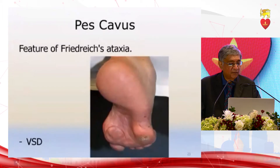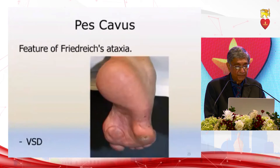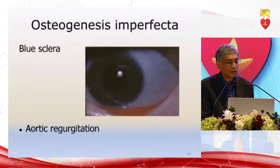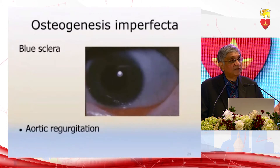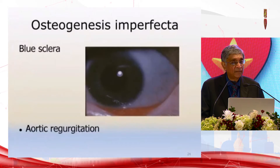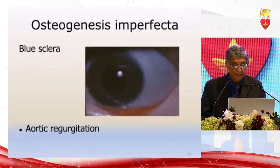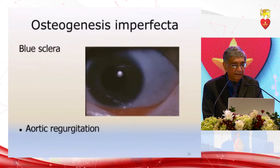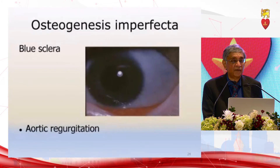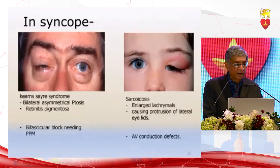Pes cavus features of Friedreich's ataxia — these are all myopathies associated with ventricular involvement. In osteogenesis imperfecta, you see the blue sclera: the sclera is normally white but is now defective, and therefore you see the dark choroid beneath, appearing blue through the now-transparent sclera. It is associated with aortic regurgitation — sometimes seen in adults — and therefore important to recognize.